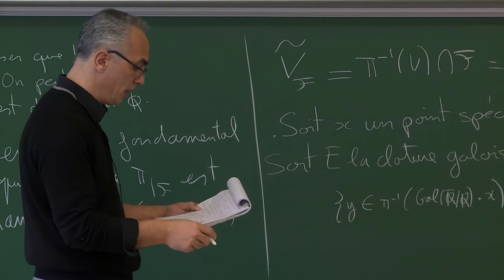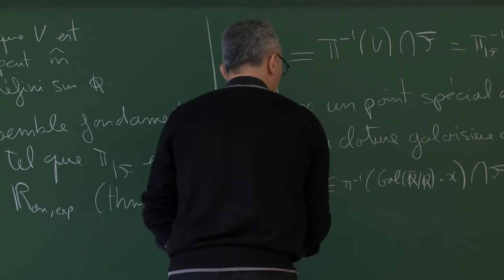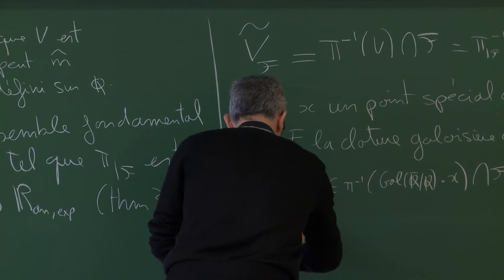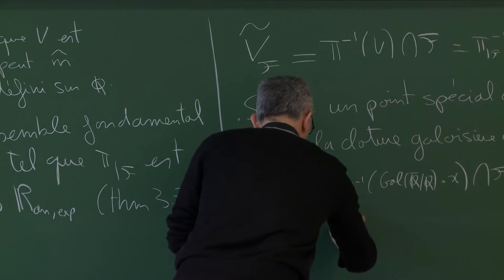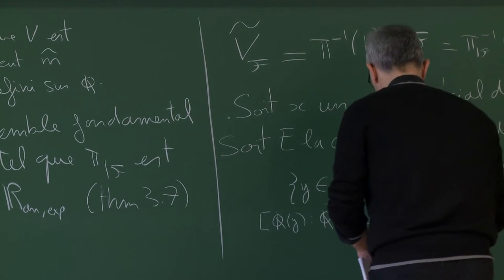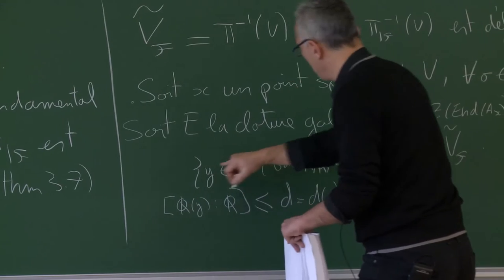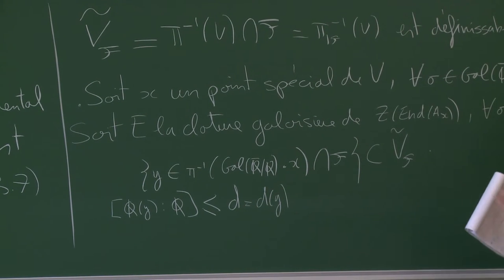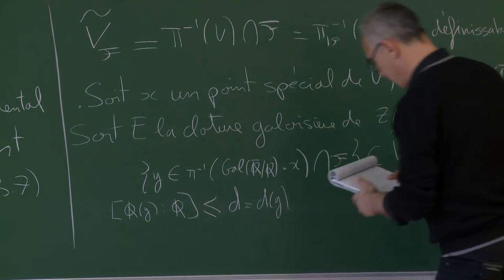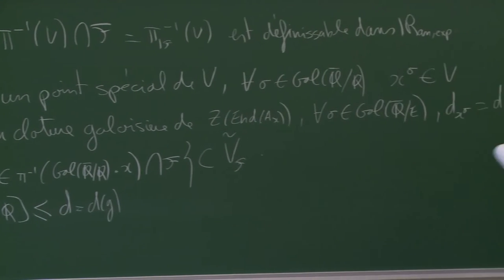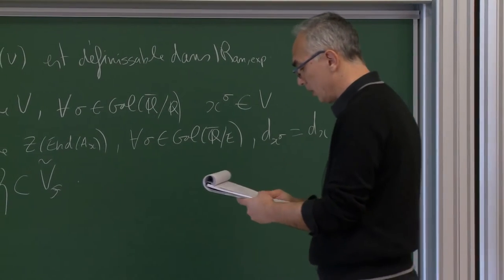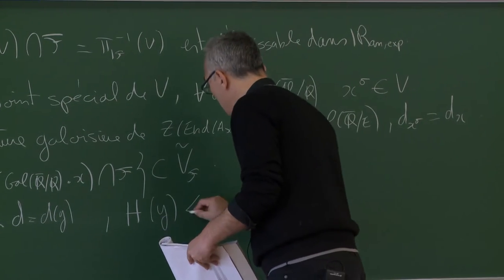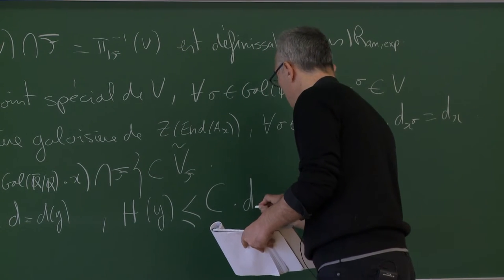Qu'est-ce que je sais ? Premièrement, quel que soit y appartenant à cet ensemble, le degré du corps de définition d'un tel y est uniformément borné par une constante en D^{2g}. Quand on relève les points CM dans l'espace de Siegel, on a cette propriété — g c'est le genre, un truc fixé une fois pour toutes. Ensuite, la hauteur d'un tel y est bornée par une constante fois d_x puissance alpha — c'était le théorème 3.8.